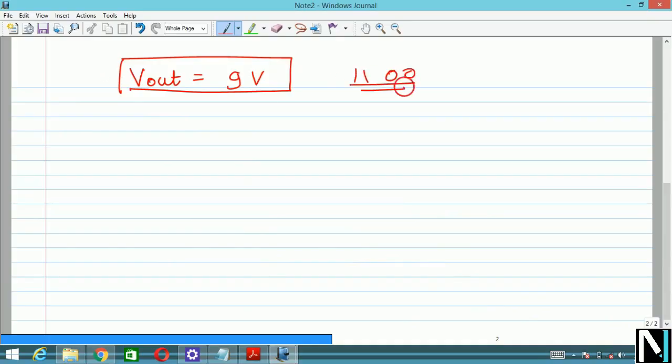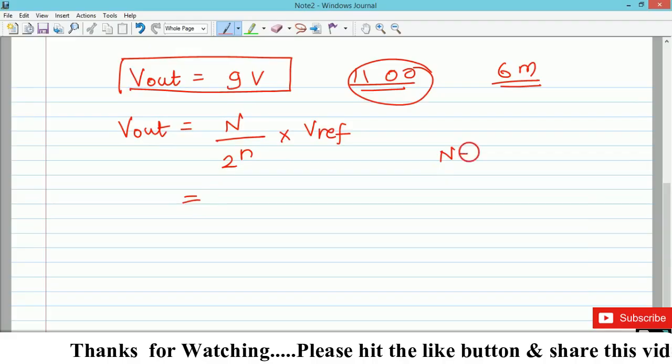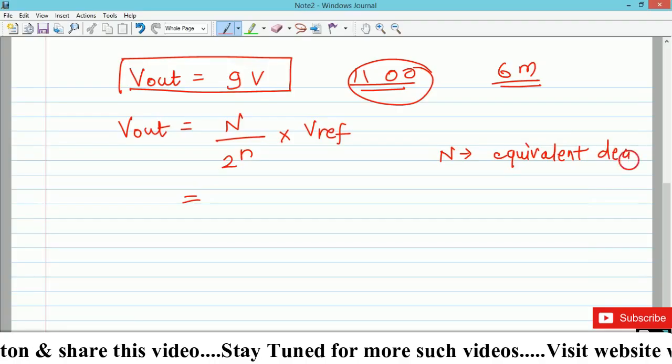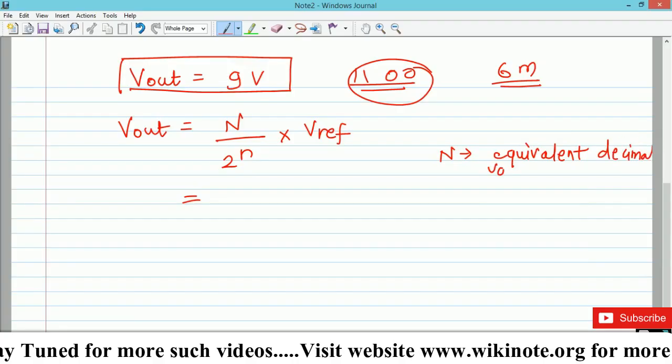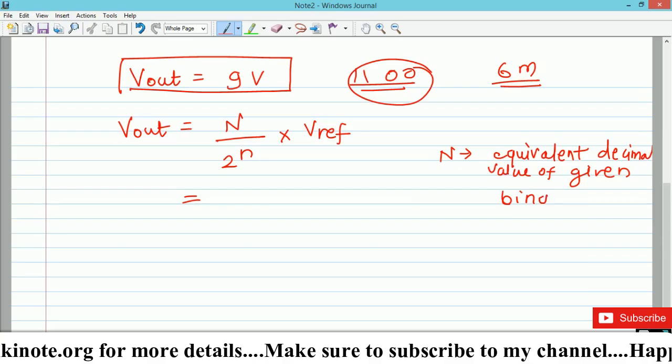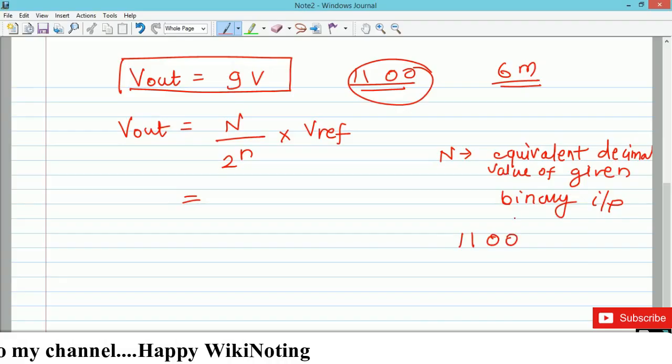This is a simple numerical which was asked for 6 marks. There is also a shortcut trick for this. You can write down Vout is equal to n divided by 2 raise to N multiplied by V reference. Here n is nothing but the equivalent decimal value of the given binary input.